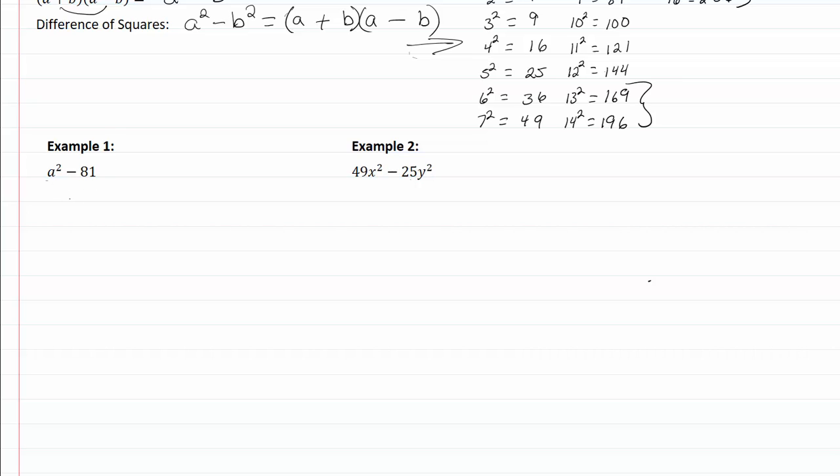Let's take a look at example one. We have a perfect square for our first term and a perfect square for our second term. That means we have a difference of squares.